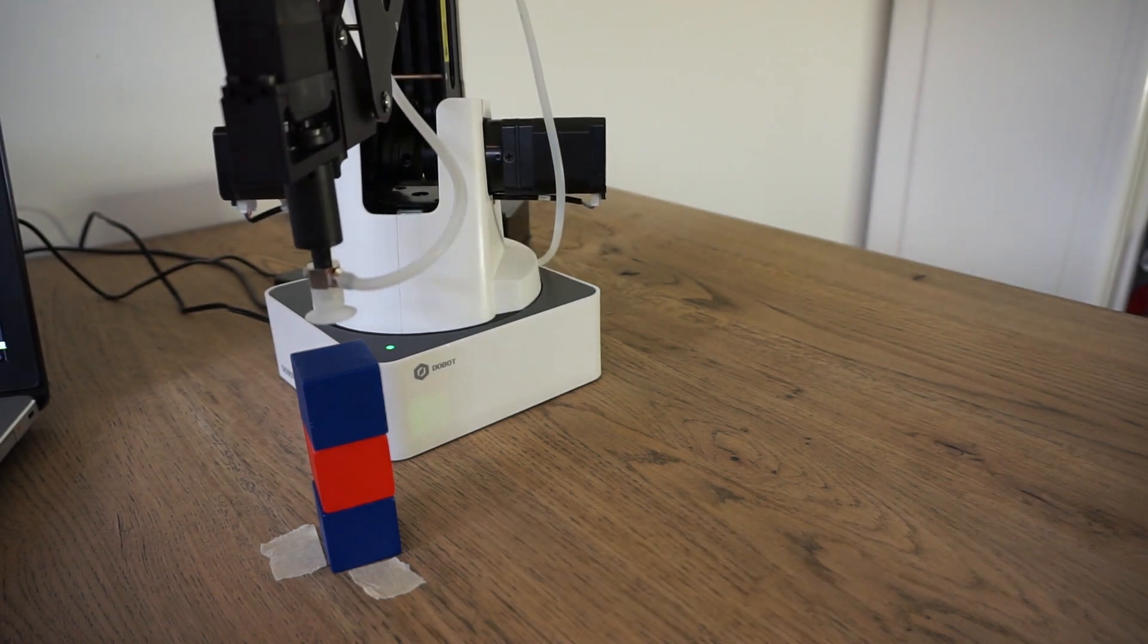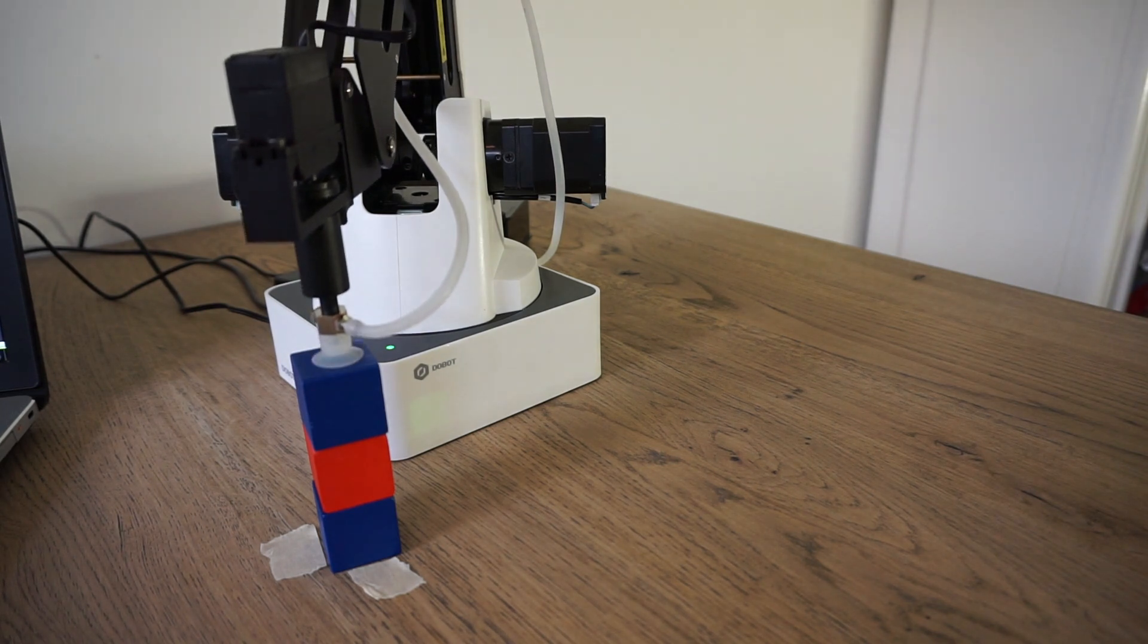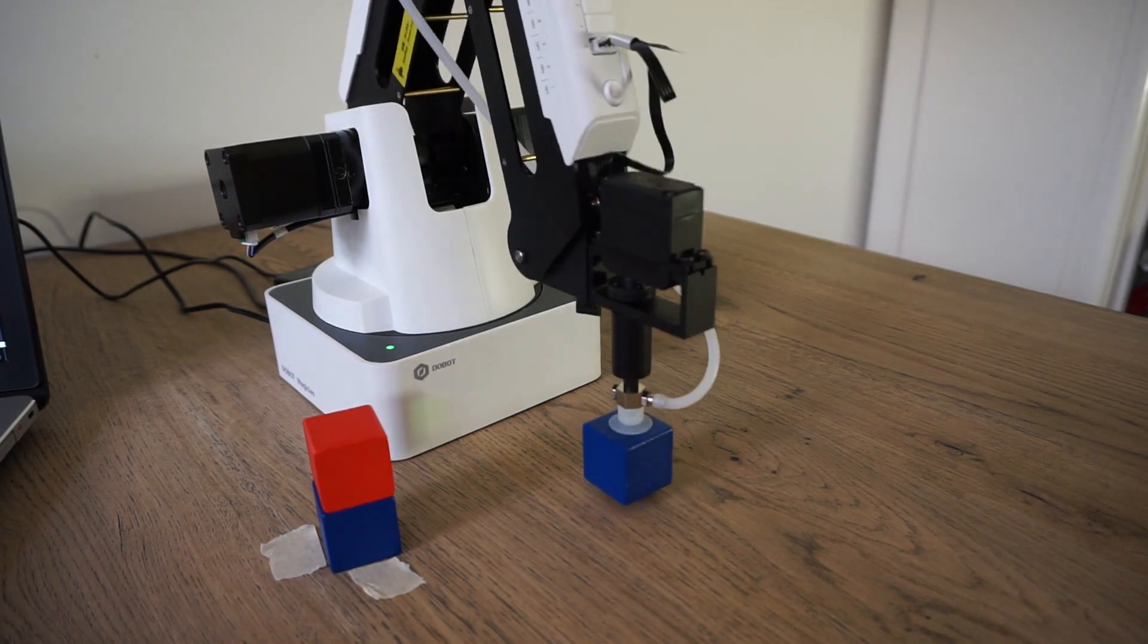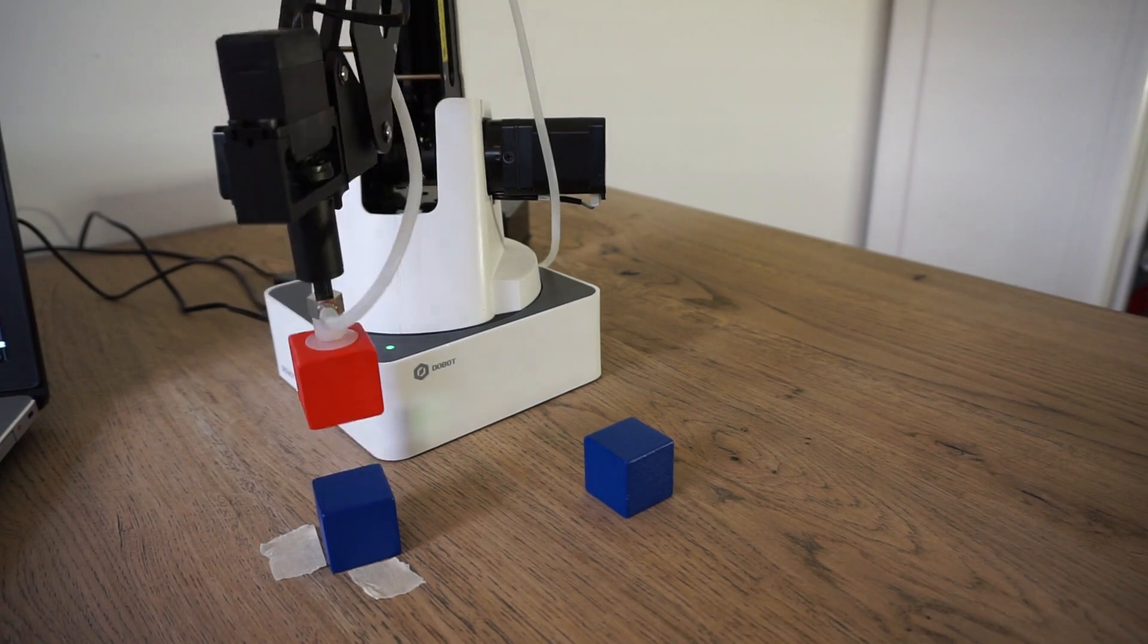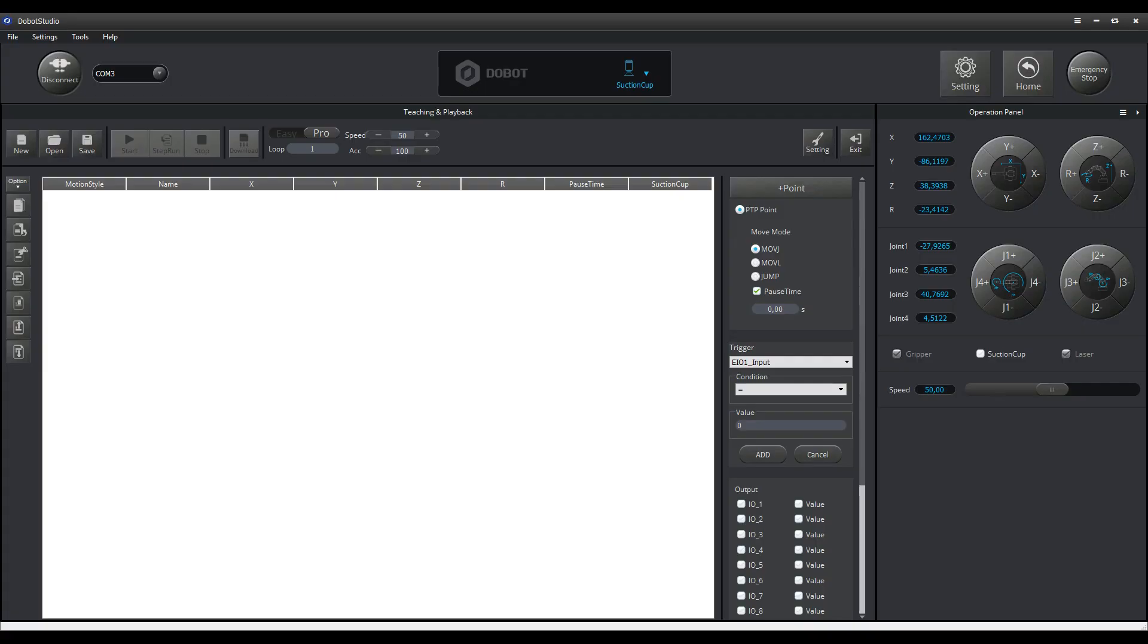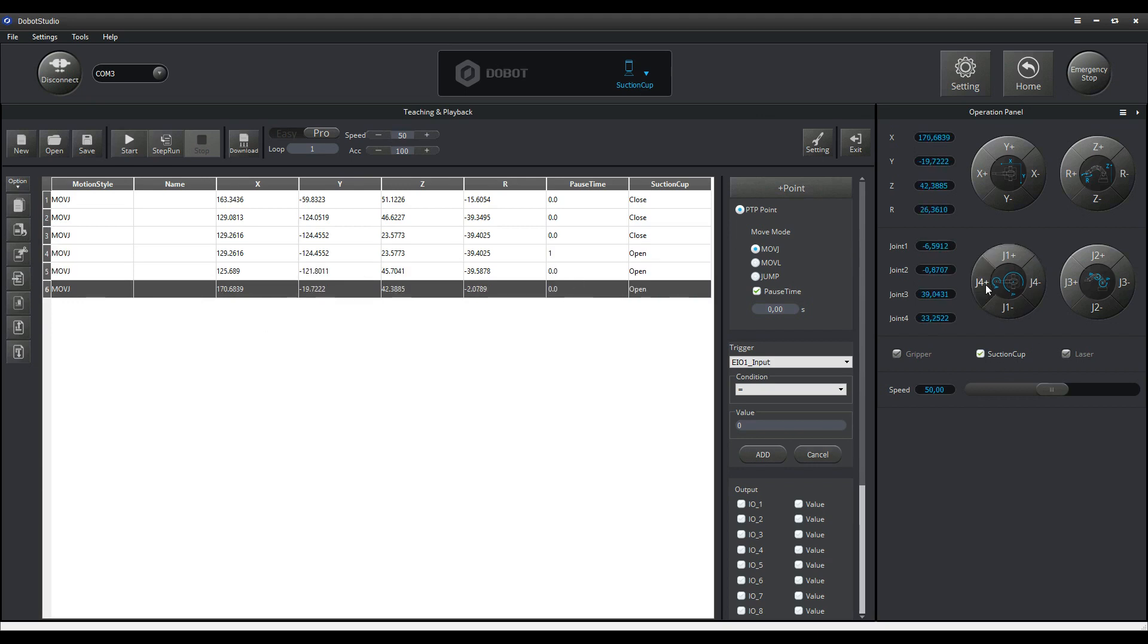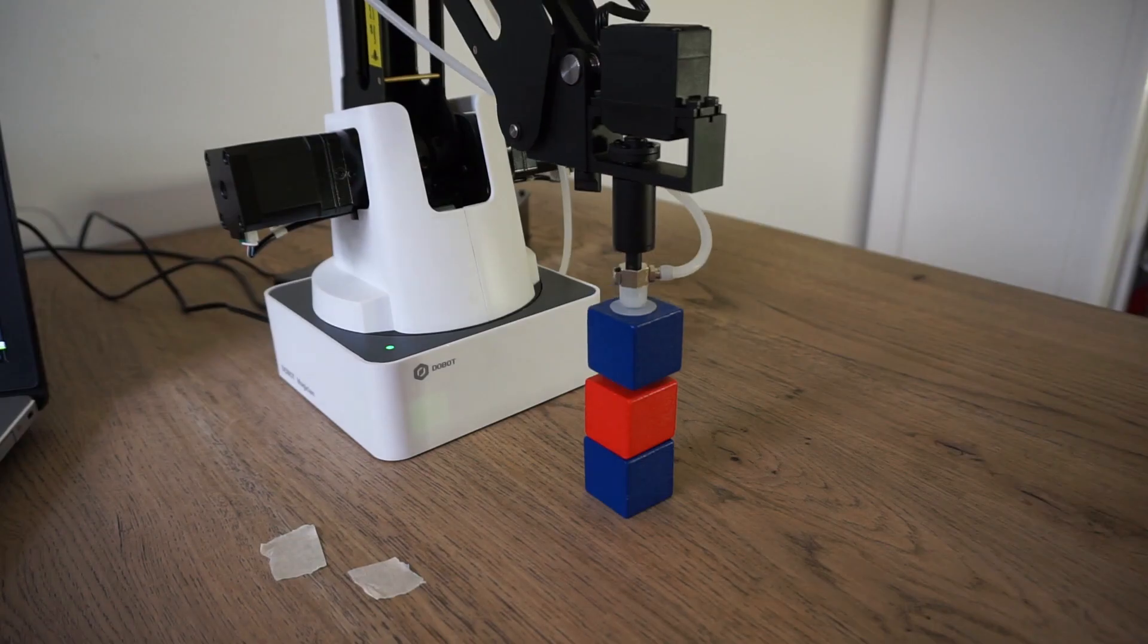When performing a simple pick and place sequence, you can add coordinates and indicate if the end effector needs to be activated. Also, delay times can be set at each point, which are useful when picking up objects with a vacuum cup, since it takes some time for the vacuum to reach a sufficient level. Usually one second is enough.